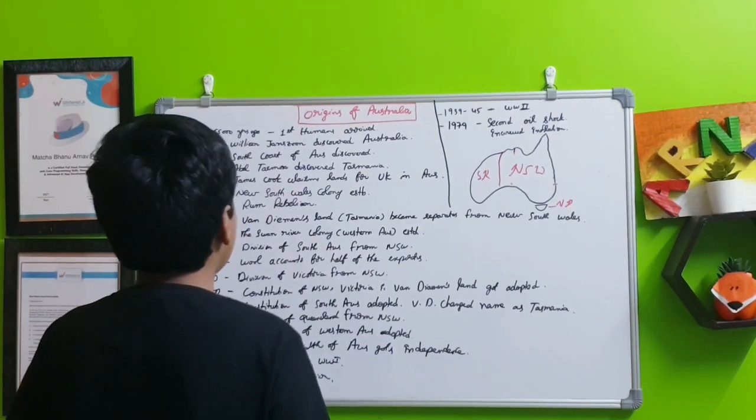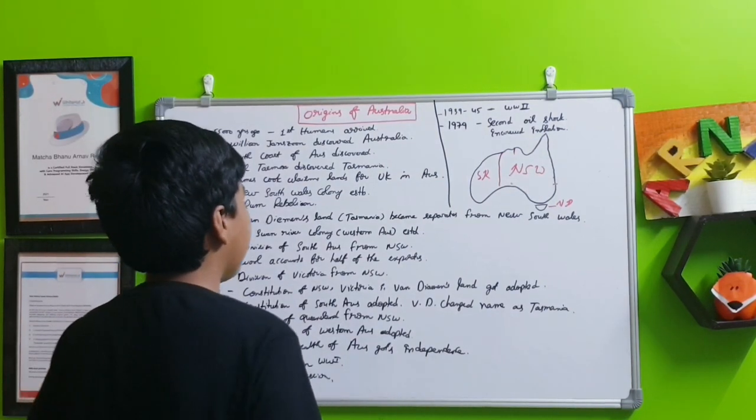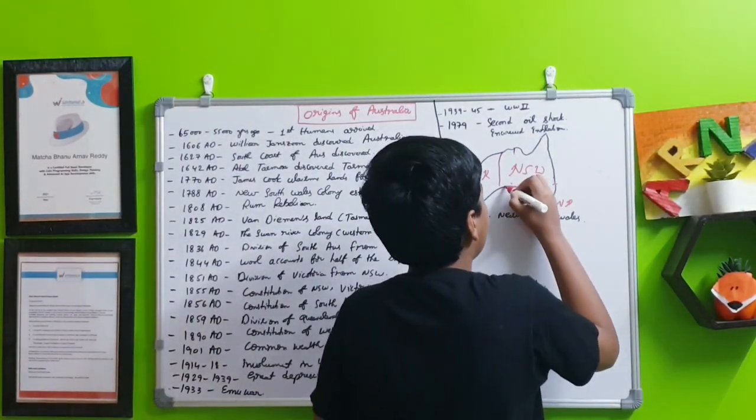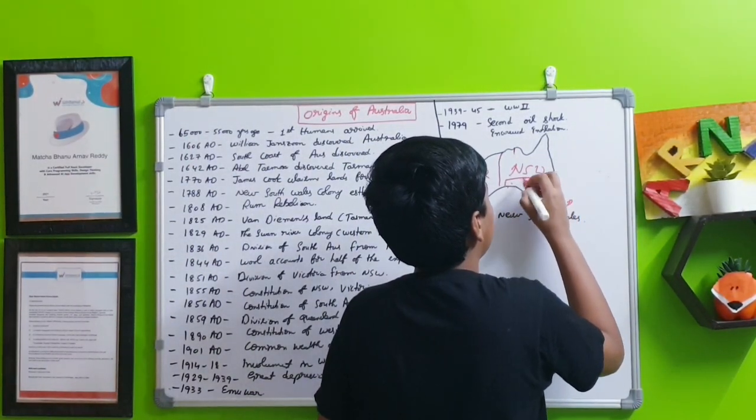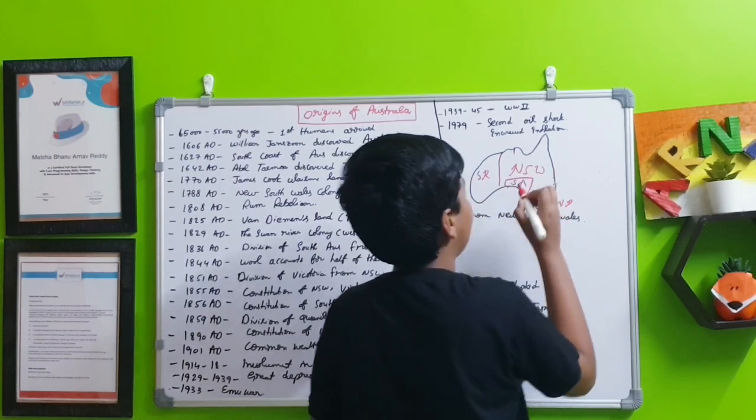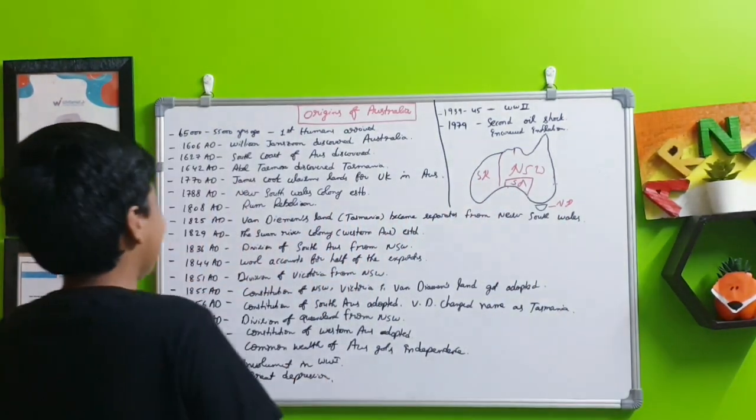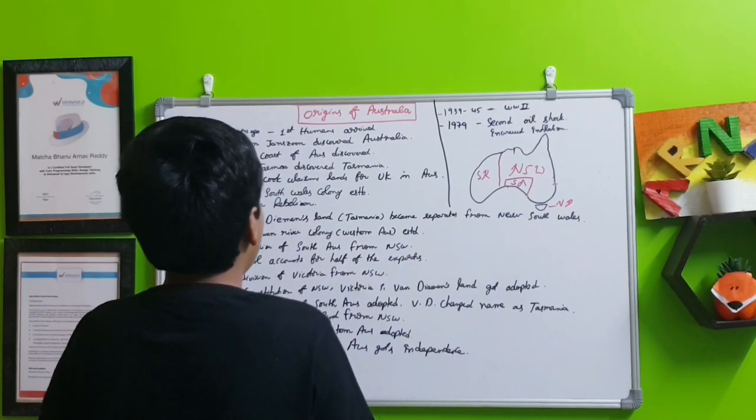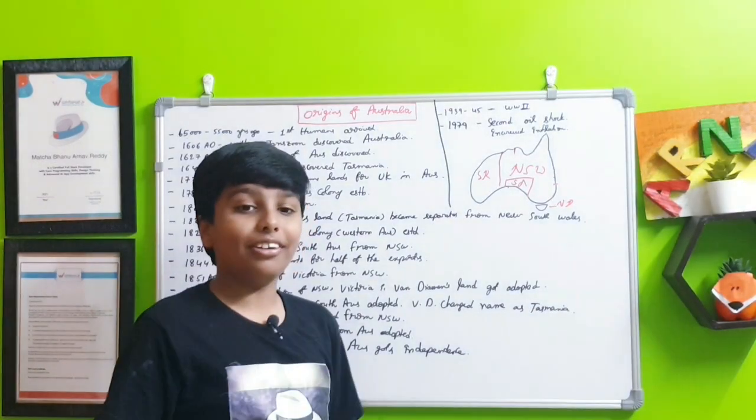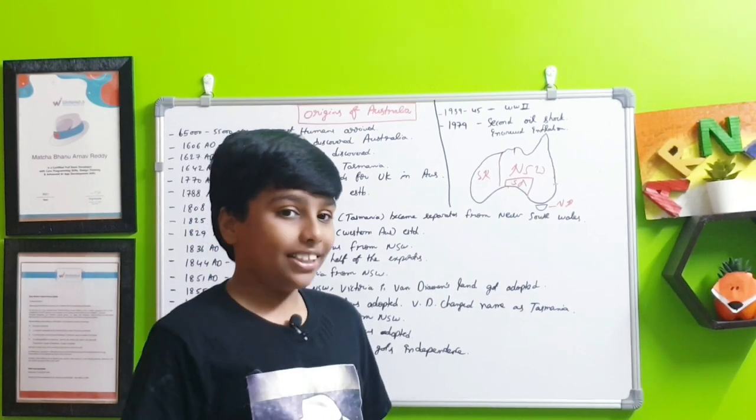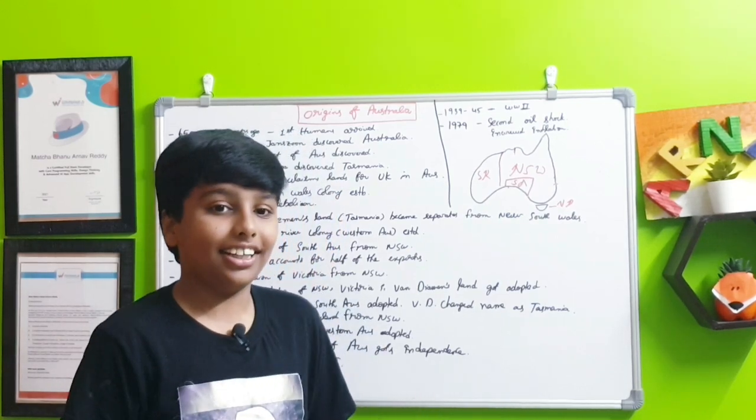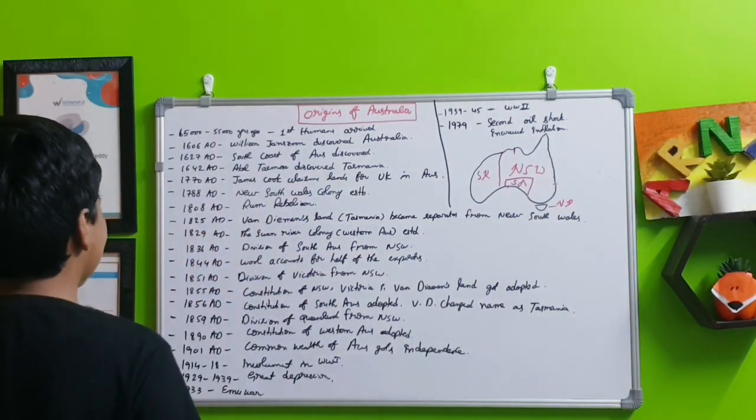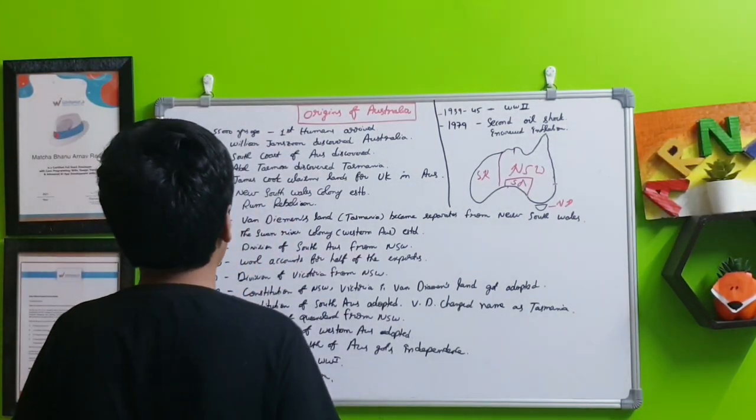In 1836 the division of Southern Australia from New South Wales happens. In 1844 wool accounts for half of all of the exports of this country, the colony. Wool, just wool, that's a lot of wool.